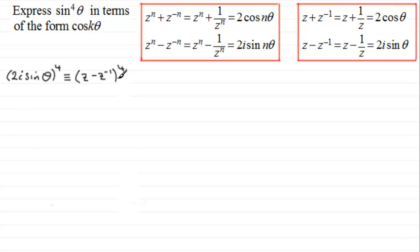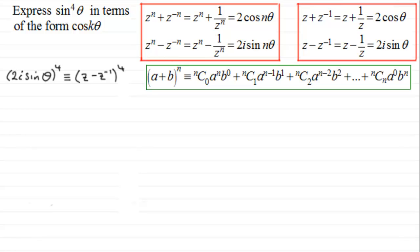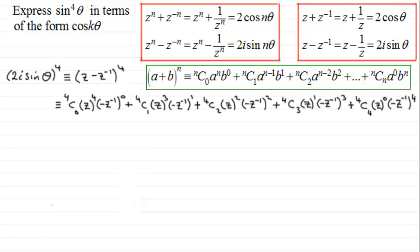Now what we need to do here is expand this using the binomial expansion formula, which I'm assuming that you're familiar with. a will correspond to z and b will be minus z to the power minus one, and n would be four. Now this is quite long, so what I've done is I've written this out for you. You might like to pause the video at this stage just to check each of these terms.